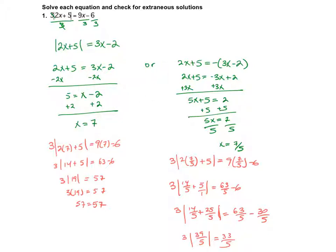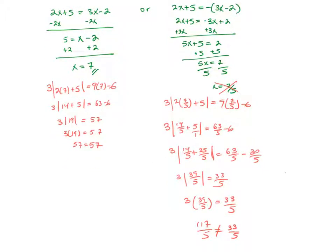Let's check the work again. I have 2x plus 5 equals the negative of 3x minus 2. So 2x plus 5 equals negative 3x plus 2. Adding 3x on both sides gives 5x plus 5 equals 2, so 5x equals negative 3, and dividing by 5 gives x equals 7/5. Even though it gave me an answer, it's an extraneous solution because when we do the check, the check does not hold. So my only solution here is x equals 7.